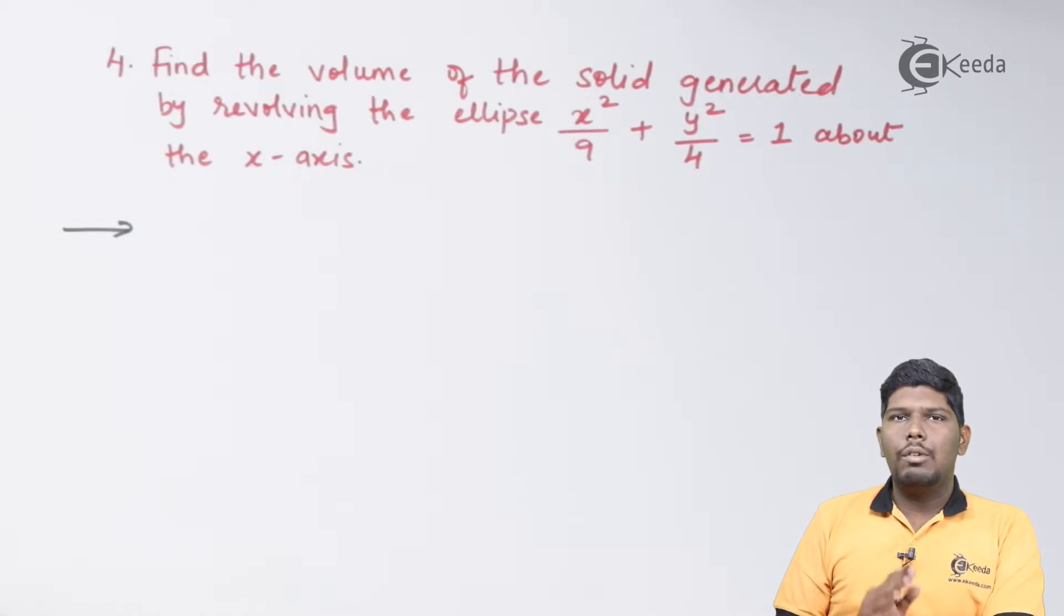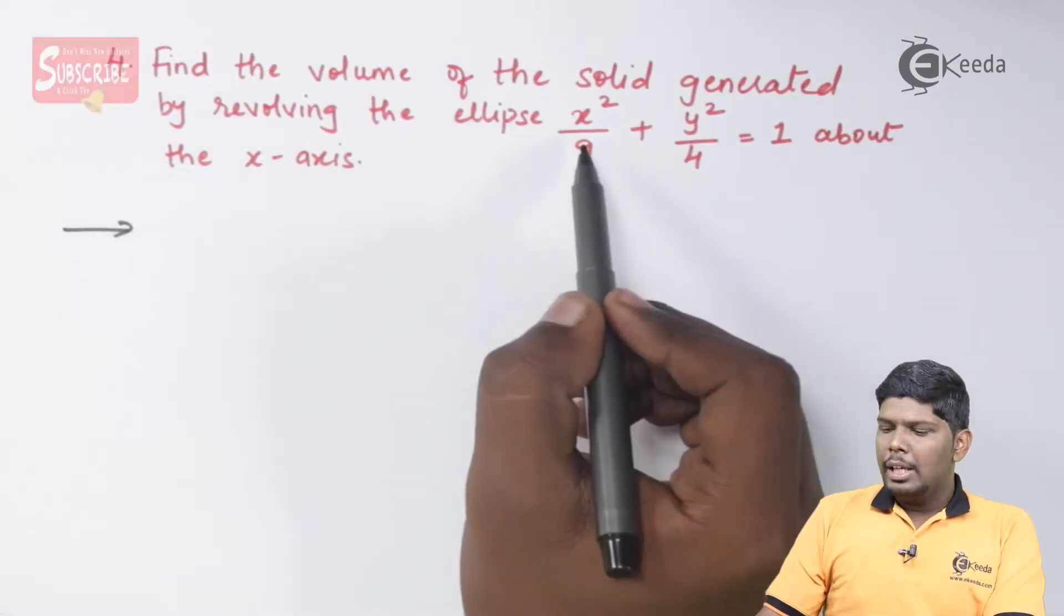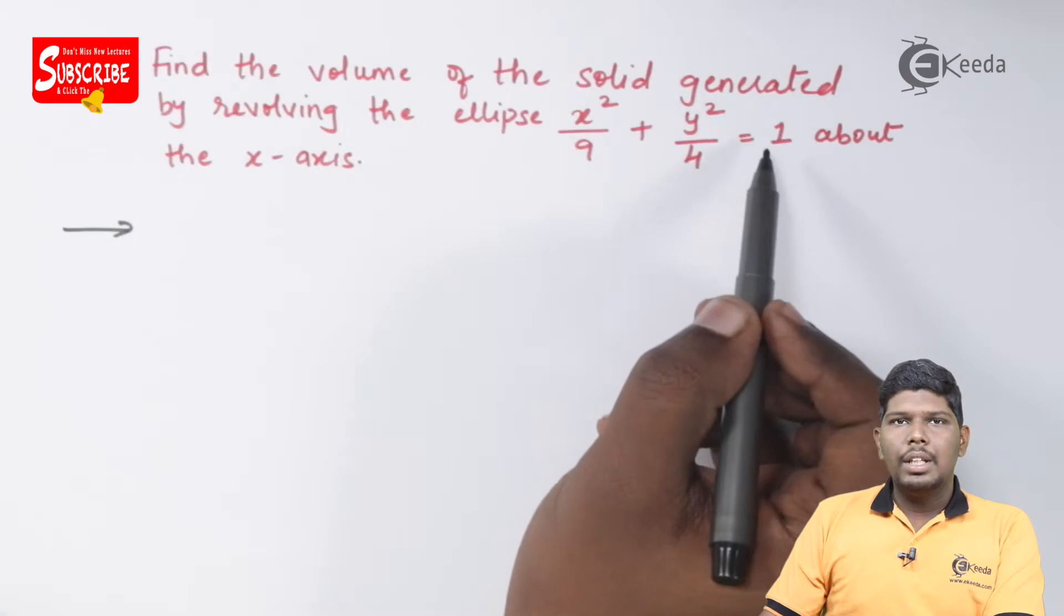So here also they have told you to generate or rotate the ellipse about the x-axis. So we first need to find the limits of x. As you can see, we can directly compare with the standard formula.